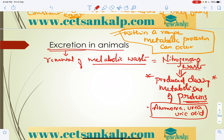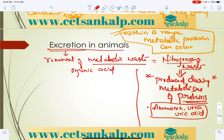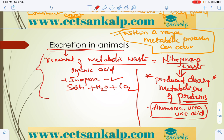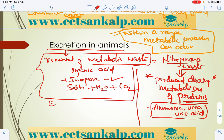Along with nitrogenous waste, other organic acids produced in excess, inorganic acids, salts, water, and carbon dioxide are also eliminated. The elimination of all these materials is called excretion. The organs involved are called excretory organs and the system is the excretory system.